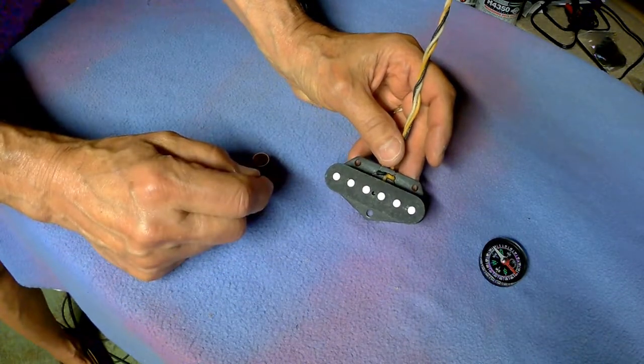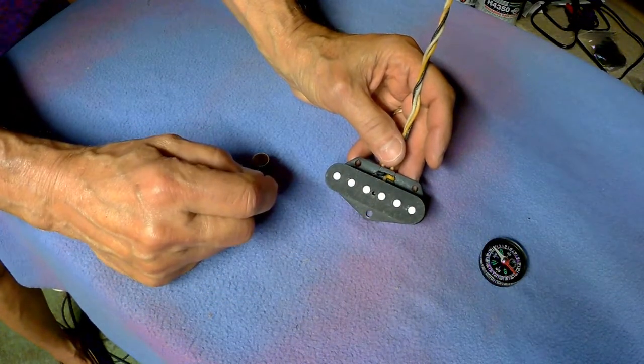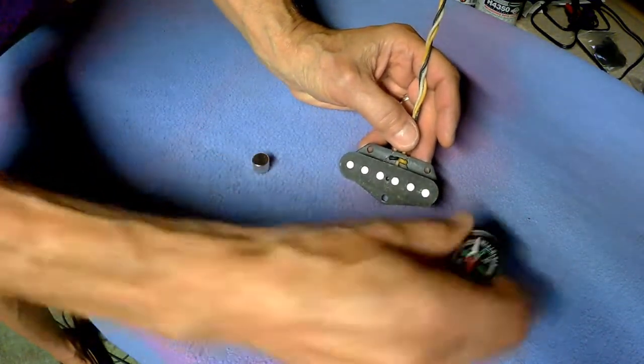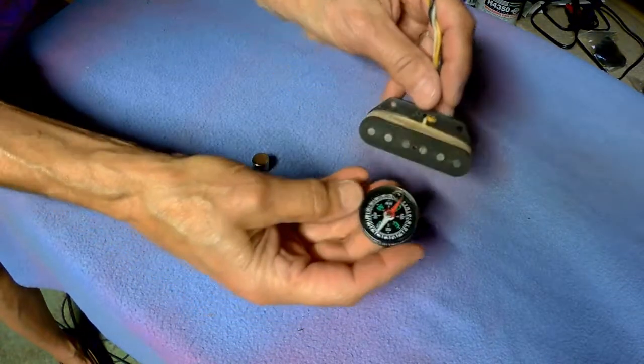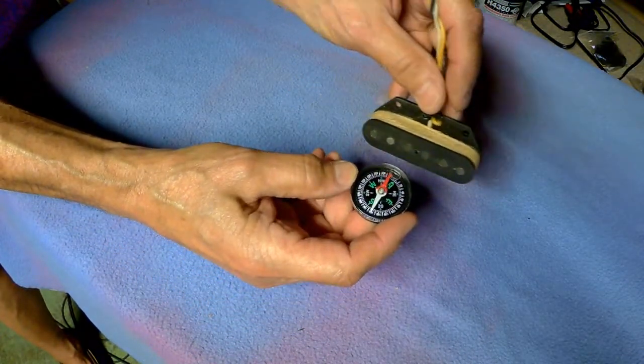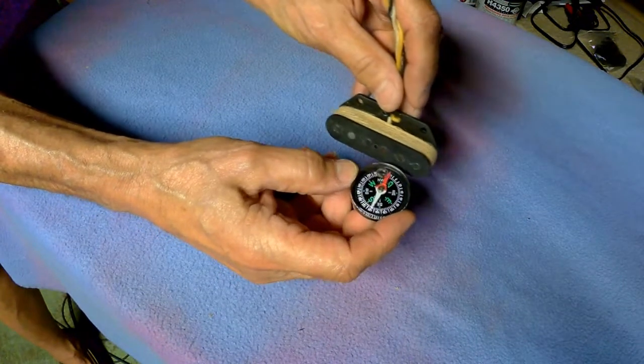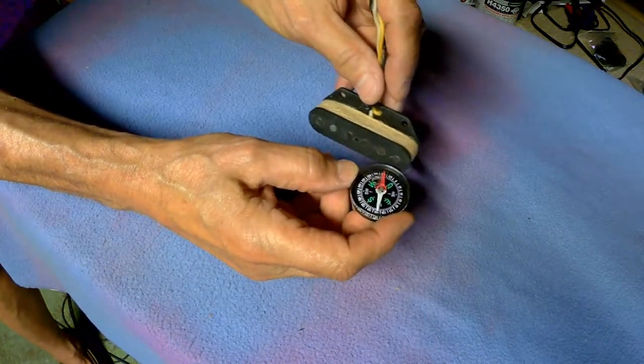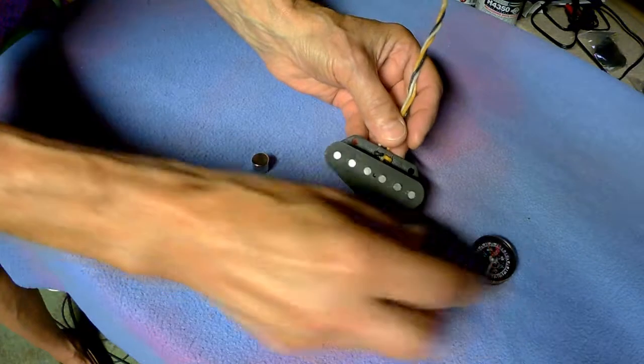Obviously, these are rod magnets. These are Alnico V magnets, and if we take a simple magnetic compass and point it at it, we'll see that the north, or red needle, is pointing to the top of the pickup, which means that this is top-south, and we want to flip it.